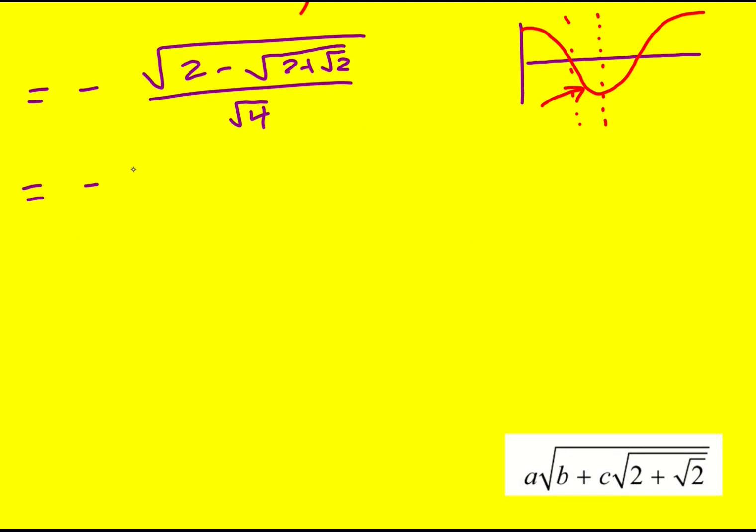So it will become minus 1 over 2. We need to write it in this form. Dividing by root 4 is the same as divided by 2, same as times by 1 half. And then root 2 minus root 2 plus root 2. And that is our answer.